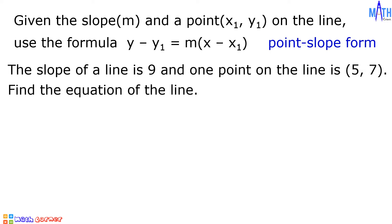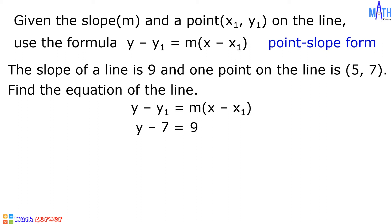Let us substitute the given values in the point-slope form. y minus y sub 1 becomes y minus 7 equals m, which is 9, times quantity x minus x sub 1, which becomes x minus 5.